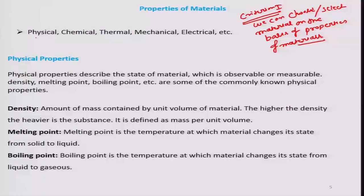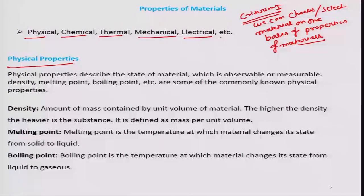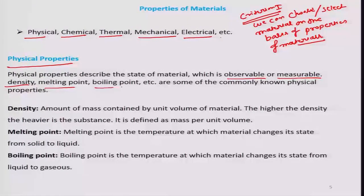Each material possesses physical, chemical, thermal, mechanical, electrical, and optical properties. Physical property describes the state of a material which is observable or measurable — you can check physical properties by your naked eye. Density, melting point, and boiling point are some commonly known physical properties. Density is defined as mass per unit volume — the amount of mass contained by a unit volume of the material.